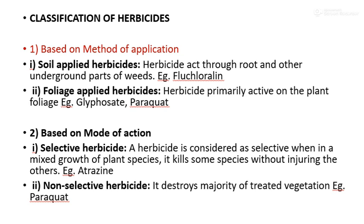Classification based on mode of action. There are two types: selective herbicide and non-selective herbicide. A selective herbicide is one that, in a mixed growth of plant species, kills some species without injuring others — it only kills targeted plants, not other plants. Example: atrazine. A non-selective herbicide destroys the majority of treated vegetation. Example: paraquat — this type can destroy all vegetation.